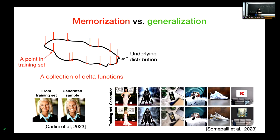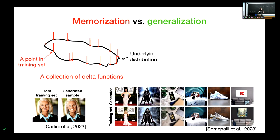One possibility is that maybe they are just memorizing the training examples. In that case, the learned density is just a collection of delta functions. The true underlying distribution is shown by a one-dimensional manifold, and the learned density is shown by a collection of red delta functions. Some recent work has shown that this is actually what some state-of-the-art diffusion models do — generating samples that are almost exact replications of images in the training set, or patching together regions from different training examples.